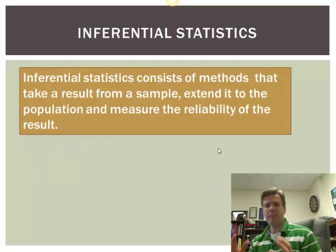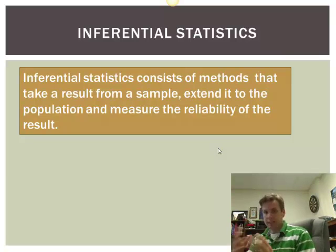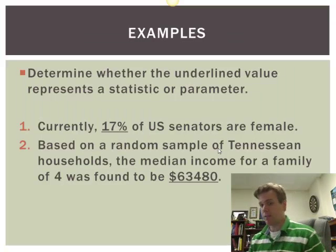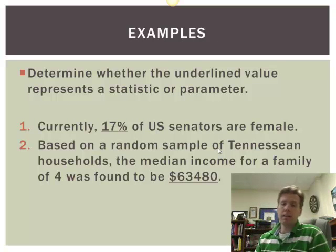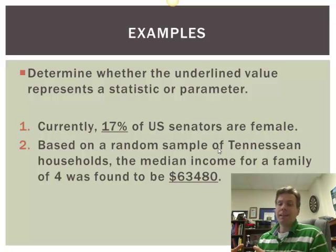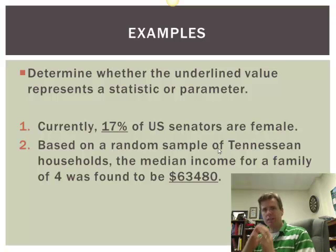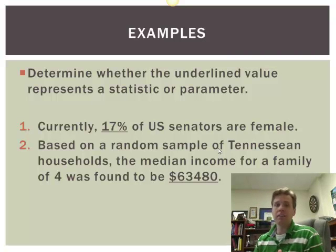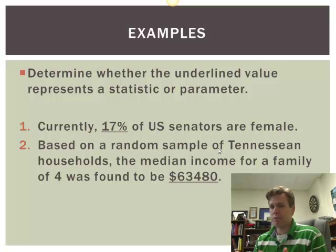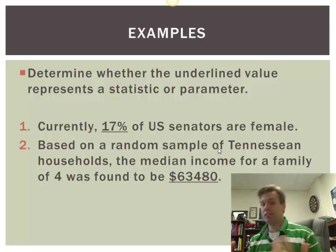Inferential statistics consist of methods that take a result from a sample and extend it to the population. When we looked at $63,480 as the median income, how did they get that? They got it from taking a sample of, say, 1,000 households, and through statistical techniques we extend that to everybody. We don't have to actually sample the entire state of Tennessee — statistical analysis lets us take a much smaller sample. It's more economical, less intrusive, and we can sometimes do better than trying to survey the whole population.